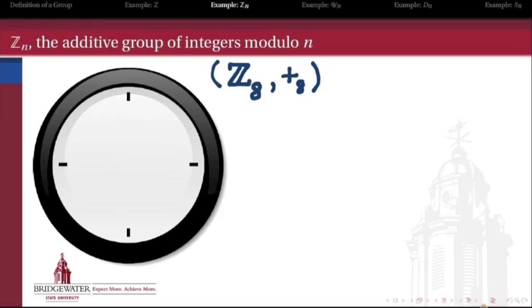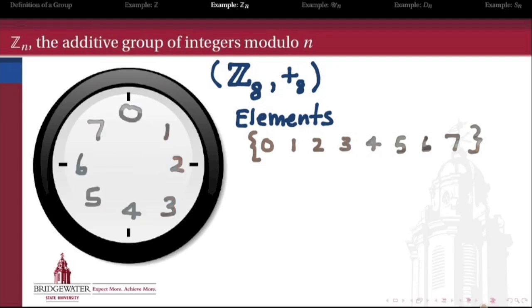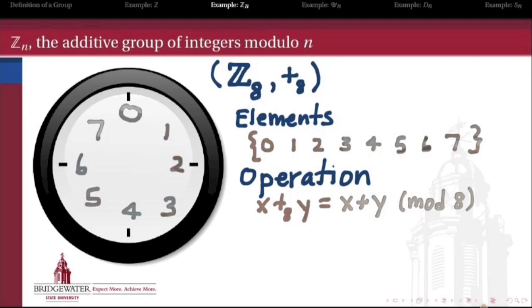The go-to metaphor for these groups is a clock face. For instance, if we look at the additive group of integers modulo 8, the elements are the residue classes modulo 8, represented by integers 0 through 7. If I arrange those on a clock face and think of addition as adding two numbers and taking the result modulo 8, then 4 plus 2 modulo 8 is like starting at 4 o'clock, taking two steps forward, and ending at 6 o'clock. 4 plus 2 equals 6.